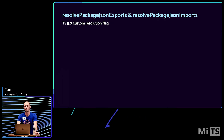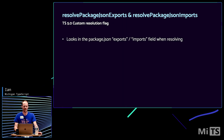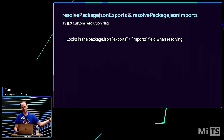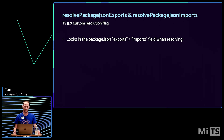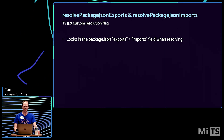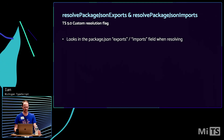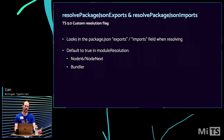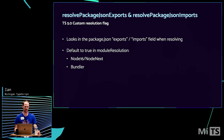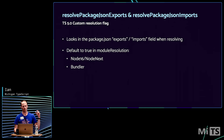These two other flags kind of go together, so I've grouped them: resolvePackageJsonExports and resolvePackageJsonImports. What that does is look in your package.json for either exports or imports maps when trying to locate modules. These are fairly new features added in Node 12 — at least exports was; imports may have been a little bit later. These default to true in the modern modes for module resolution: Node16, NodeNext — right now they're the same thing — or the bundler option.